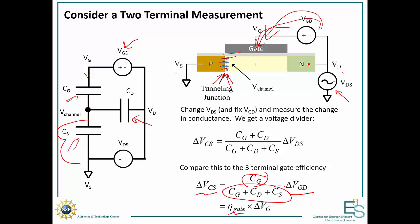When we consider changing the drain voltage, since we're changing both the voltage at the drain and, by how it's connected, the gate voltage, we get CG plus CD over the sum of the three capacitances. This change is closer to the voltage applied, VDS. In practice, CD is usually very small, so these two approaches end up being almost the same.